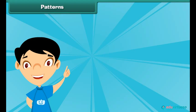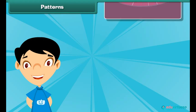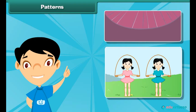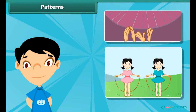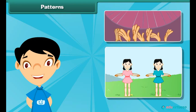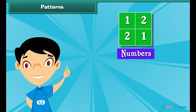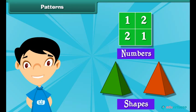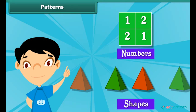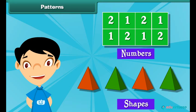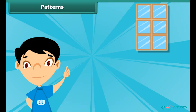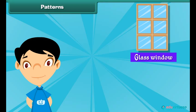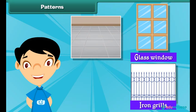There are patterns all around us. Even when you clap or jump in a specific order, you follow a pattern. Today we will learn about patterns of numbers and shapes. Pattern is a set of shapes or numbers formed by repeating it over and over again. You can see a pattern in a glass window, iron grills, and floor tiles.